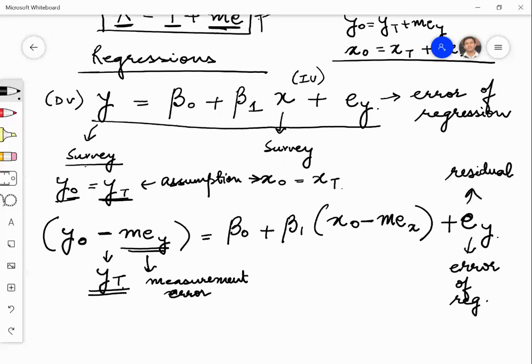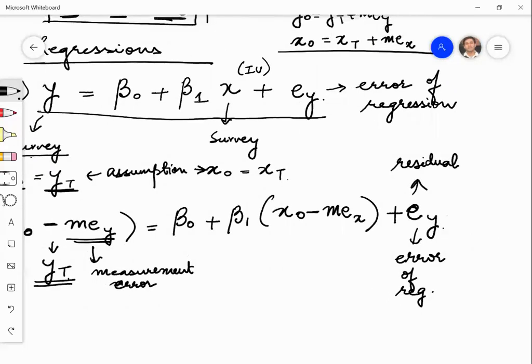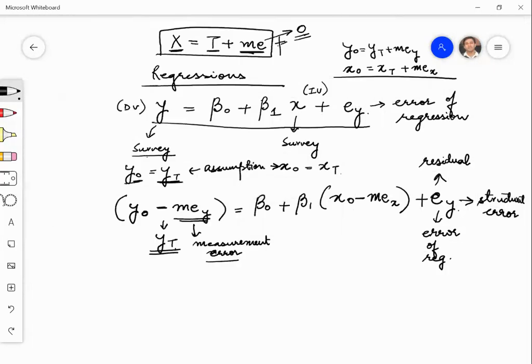We call it as residual. And in SEM terminology, this will be called as the structural error. So we will have two kinds of errors. We will have the measurement error and we will have the structural error.